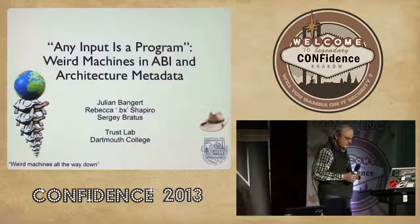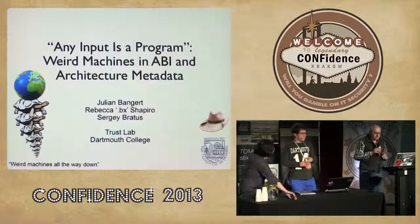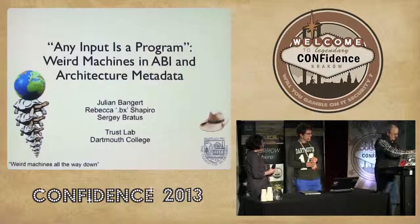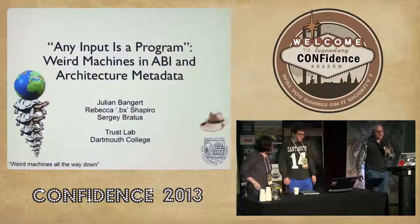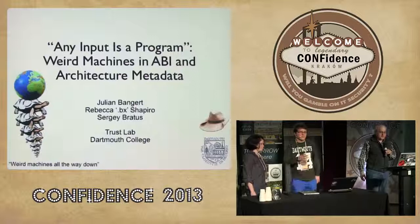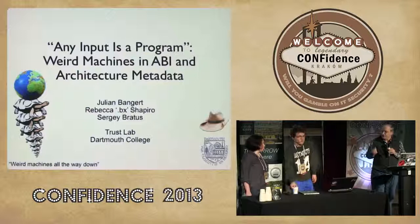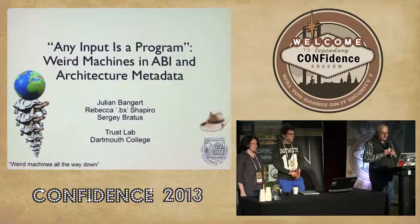I would like to introduce Rebecca, Julian, and Sergei, and they're going to talk about weird machines in ABI and architecture metadata. If you have any questions, just raise your hand and I'll give you the microphone. Sorry for the issues with these machines. We're going to show you machines that are weirder than this, but a lot more fun. We're from Dartmouth College, a small college in the northeast of the US, two hours north of Boston. Rebecca and Julian are going to present their respective parts of research. I will start with an intro explaining what we do and why we do it.